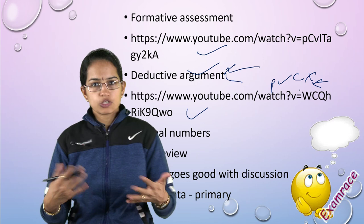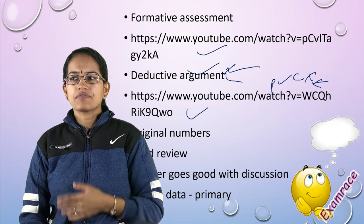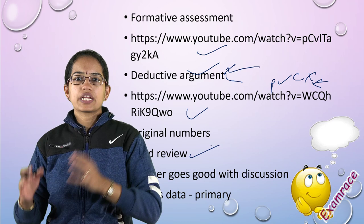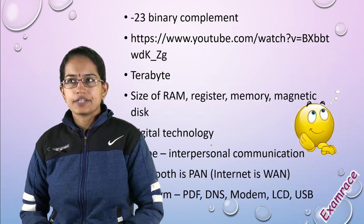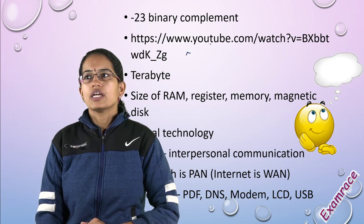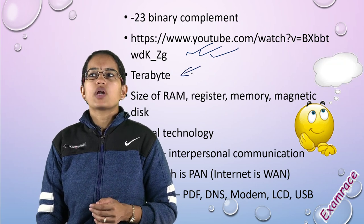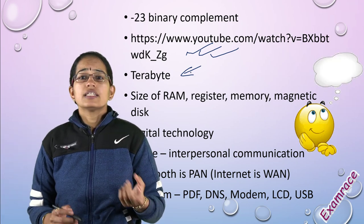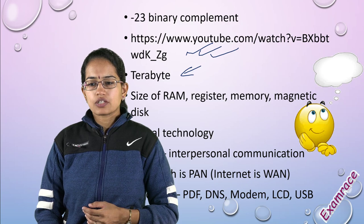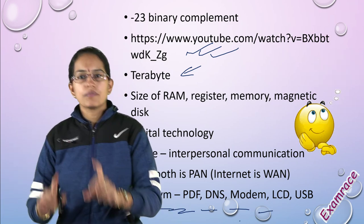Sources of data - primary and secondary sources, and which constitutes which category were the kind of questions. When it comes to computers, the questions were tricky this time. You had two's complement that we already talked about before. There was a question in 2017 and 2016, so we were all set. What are terabytes? Units of terabytes. Then the size - size for RAM, for register, memory, or magnetic disk was a match-the-following question. Acronyms across various papers - some asked for PDF, others for DNS, LCD, USB.